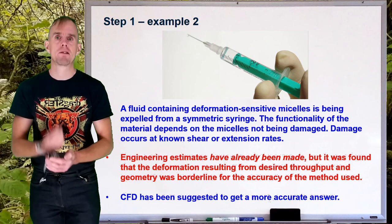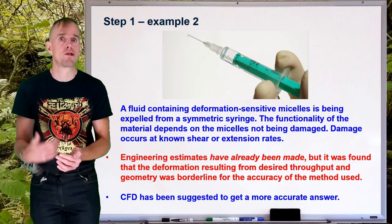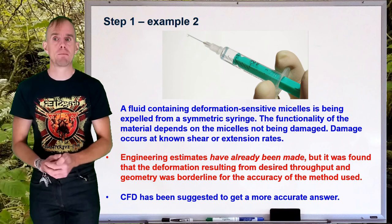Now, let's say that engineering estimates have already been made, but the answer is unclear. Within the precision of the engineering estimate, let's say that the answer is, well, they might still be damaged. The precision is not great enough. We don't know. We need more accuracy. And so computational fluid dynamics, therefore, has been suggested to get a more accurate answer. OK, so we've justified not using an analytical approach now.